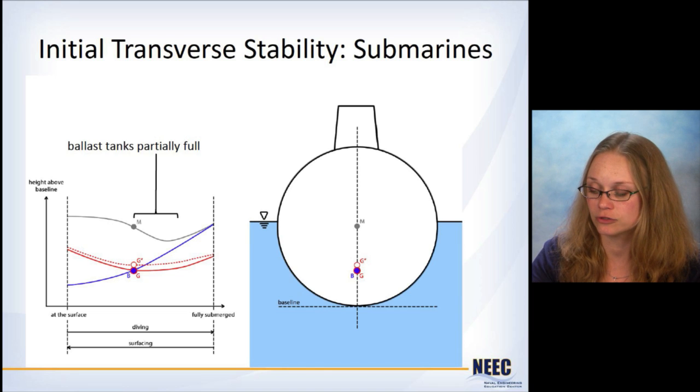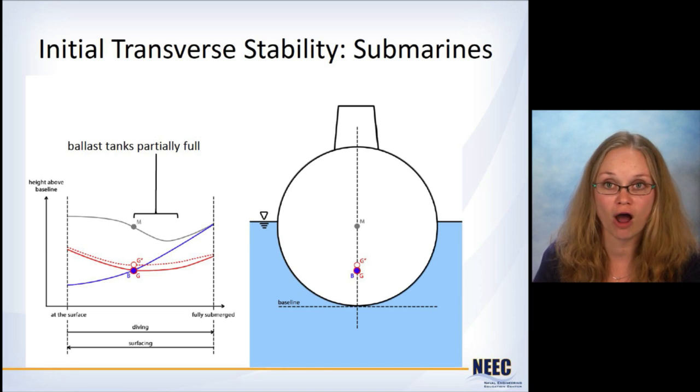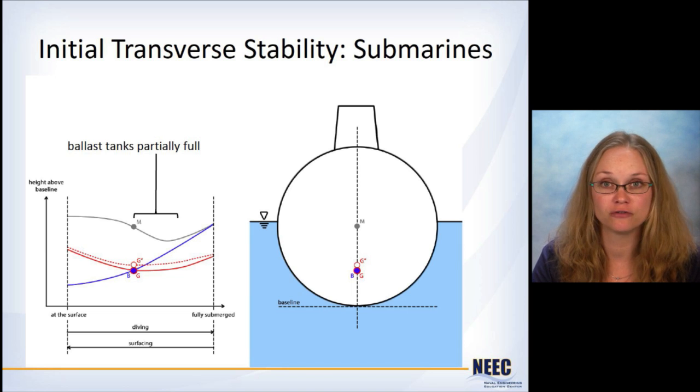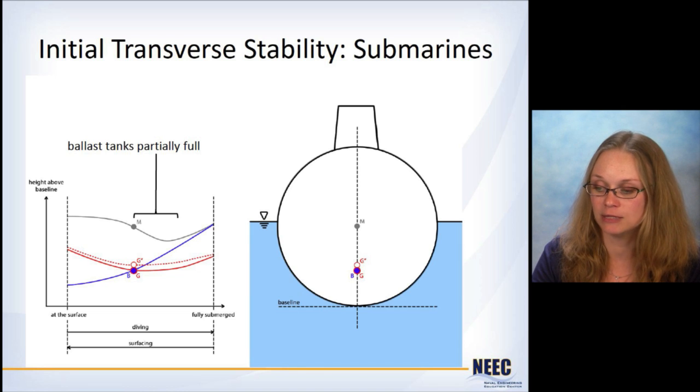But then as you get closer to this midpoint here, you've got now B and G are going to cross, because we know that's crossed at some point because we know that the center of buoyancy is going to end up above the center of gravity. So there's some point where they coincide. Right in here, the ballast tanks are partially full, which means that you've got a lot of free surface effect going on. So you see the bigger difference between the virtual center of gravity, G double prime, and the actual center of gravity, G.